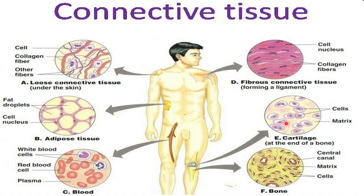Cartilage is also a specialized type of connective tissue. Its matrix is solid but elastic. The cells present within the matrix are called chondrocytes and they are enclosed within some cavities. Cartilages are found in the knee region, in the pinna of the ear, and in the nose — regions we know are quite flexible, giving elasticity to those areas.